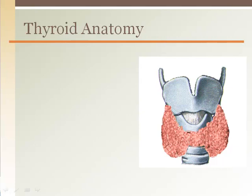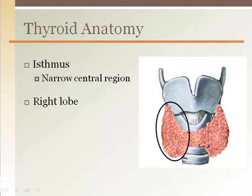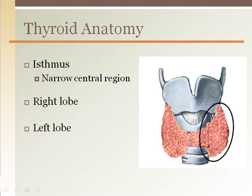The thyroid gland is shaped like a bow tie with a narrow central region called the isthmus. On either side of the isthmus, the thyroid gland has a right lobe and a left lobe.